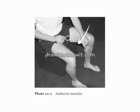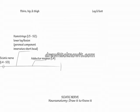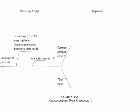Now show the sciatic nerve unbundle into the common peroneal nerve and tibial nerve, proximal to the popliteal fossa. Indicate that both nerves supply branches to form the sural nerve.